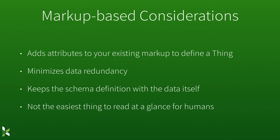These are both very markup-based approaches to implementing structured data, and there are some considerations that go along with that. On the upside, it's a package deal — where you have your content in the page is where you do all of your definition about that content, so there's no redundancy, and you're not digging around for where this schema is defined outside the context of the content it's defining. But on the downside, while the attribute-based markup feels familiar — we're like, 'okay, I get this, HTML attributes, no problem' — it's also not the easiest thing to read. Going through and threading through all of your properties and meta tags, making sure everything's in there, is not as efficient as it could be.